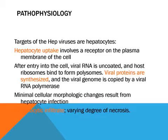The target of hepatic viruses are hepatocytes. Hepatocyte uptake involves a receptor on the plasma membrane of the cell. When the virus is within the cell, the viral RNA is uncoated and a host ribosome binds it, beginning the synthesis of viral proteins. These genomes are then copied by a viral RNA polymerase. Cellular morphologic changes result from hepatocyte infection, and there may be mild lymphocytic infiltration with varying degrees of necrosis within the cell.